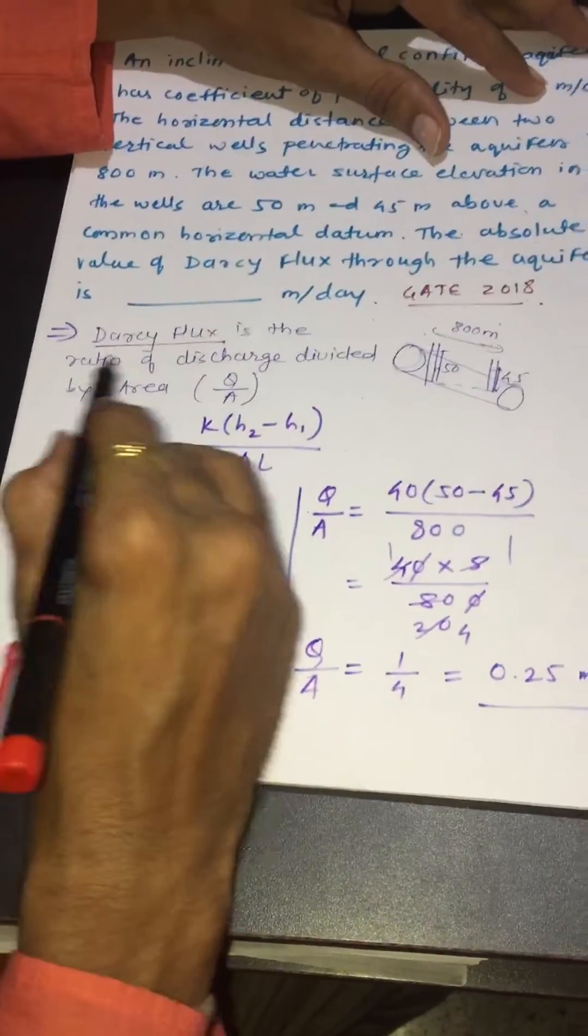We can say that Q divided by area. The formula to calculate Darcy flux is Q divided by area equals coefficient of permeability multiplied by delta H, means H2 minus H1, divided by delta L means distance.